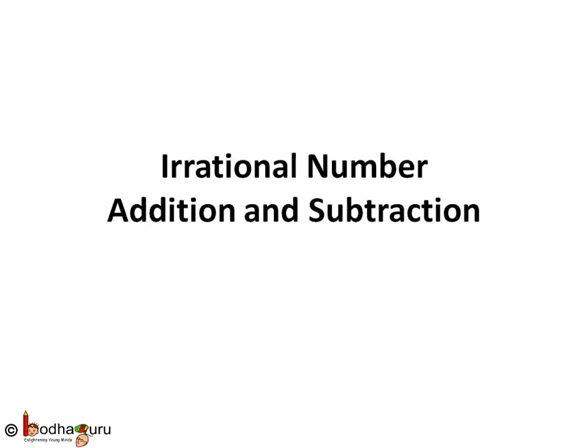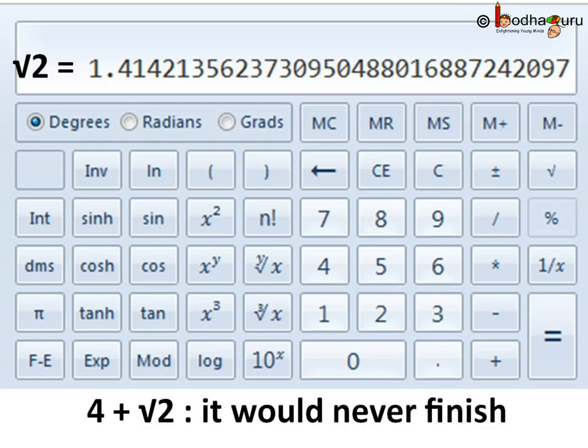Hello friends. As we saw in the last video, irrational numbers also exist on the number line just like rational numbers. So we should be able to add and subtract irrational numbers — but how? We know on a number line...